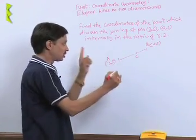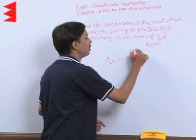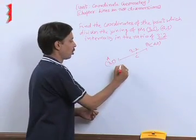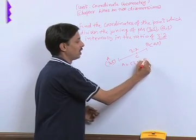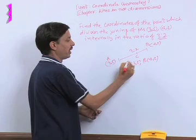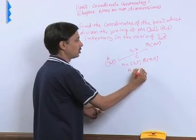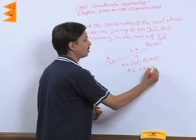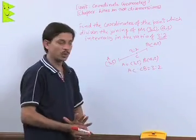Point C divides the joining of A, B in the ratio of 3 is to 2. That is, coordinates of A are (3, 5), coordinates of B are (4, 2). We want to calculate the coordinate of C where the ratio AC to CB is 3 is to 2.